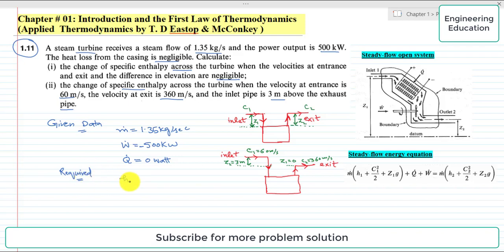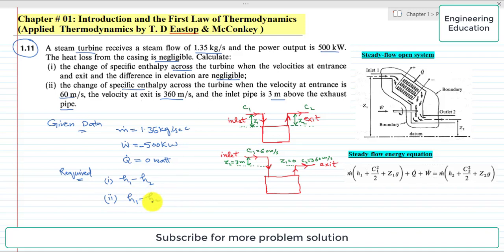We have to find the change in enthalpy, that is h1 minus h2. Suppose before entering the turbine the state of the steam is 1, and after exiting from the turbine its state becomes 2 — so this is the enthalpy drop. h1 is the specific enthalpy at the inlet of the turbine and h2 is the specific enthalpy at the exit. This is the schematic for the first case, where z1 equals z2 and velocity c1 equals c2.